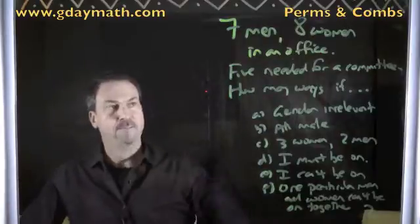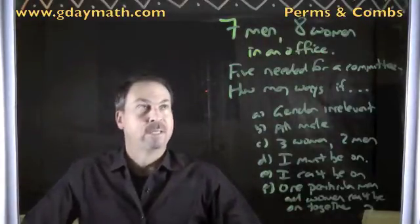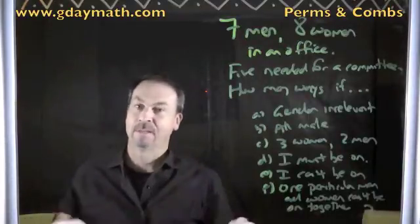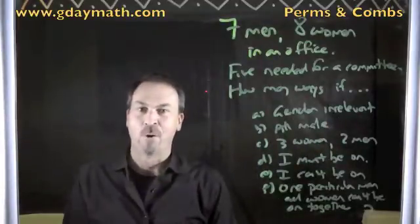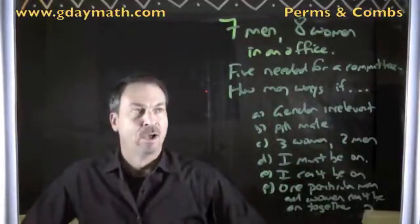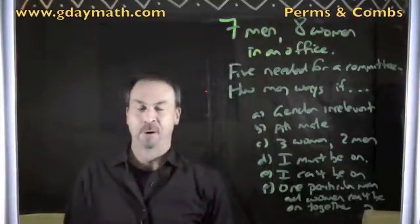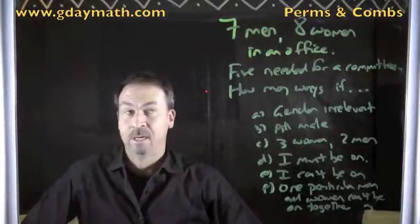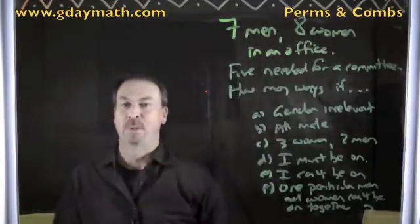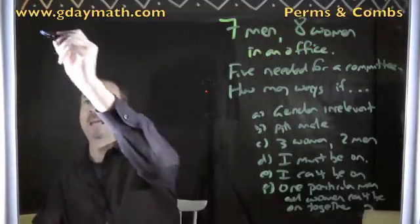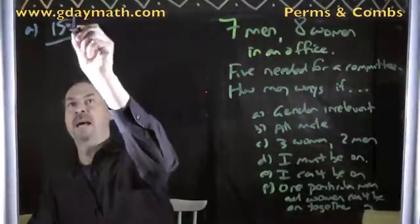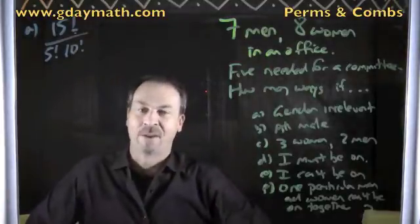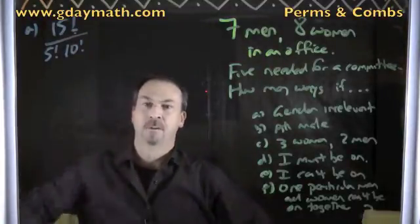Here's a very long, messily written problem. There are seven men and eight women in an office, and five are needed for a committee. How many ways can I make this committee? I've made it a six-part question with various conditions. Part A: how many ways if gender is irrelevant? In which case there are just 15 people. Five will be labeled 'on the committee' and ten will be labeled 'lucky.' That's 15 factorial over 5 factorial times 10 factorial.